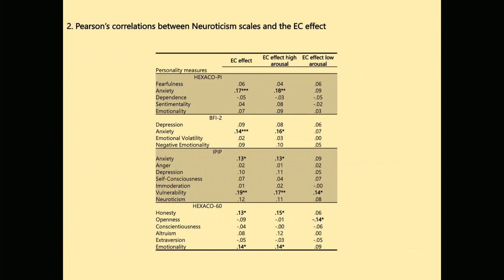We confirmed the existence of the EC effect — people prefer CS when paired with positive US. We did not find any significant effect of neuroticism. But we found a significant interaction between valence and neuroticism: the higher the level of anxiety and vulnerability, the higher the EC effect. We then investigated the moderating effect of neuroticism when considering only high-arousing stimuli and when considering only low-arousing stimuli separately.